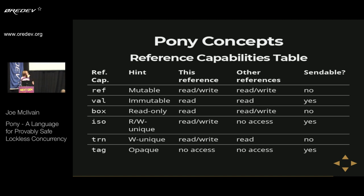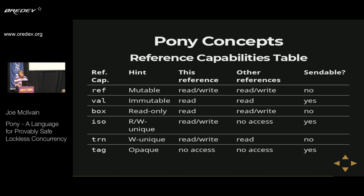A reference capability can only be sent to another actor if doing so is guaranteed to be safe — meeting one of the three concurrency patterns we discussed. Ref is a mutable reference, the kind you'd find as your only option in many object-oriented languages — it has no access constraints at all, so it's not safely sendable to another actor. Val is an immutable reference, the kind you'd find in most functional programming languages — it is read-only, and it's guaranteed that no other references exist anywhere that can write to the same object, so it can never be changed once it's a val. This makes it sendable, as it's safe to share concurrently.